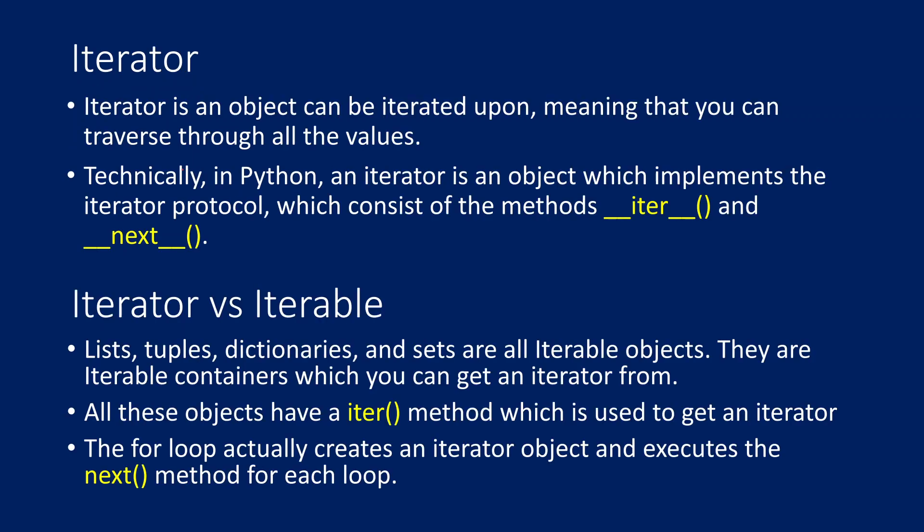Let's try to understand what an iterator is. Before that, if you have watched my previous videos in this Python playlist, you already know that there is something called list type, tuple type, dictionary type, and set type. All these are data types which allow you to store multiple values into a single data type. All these data types are actually iterable objects, meaning they contain a collection of data and you can iterate over that data.